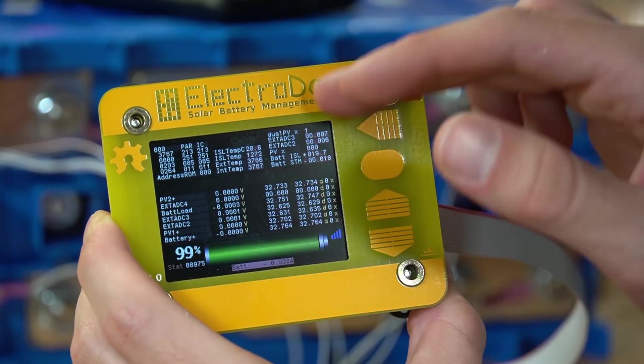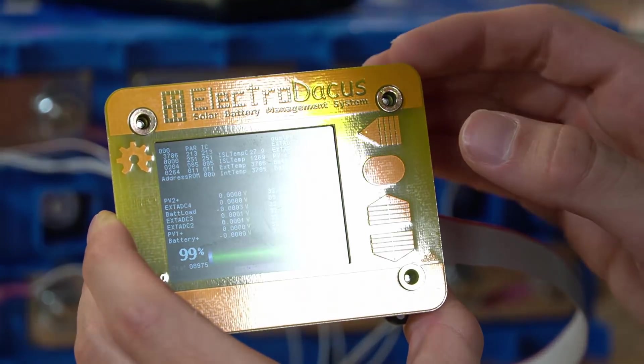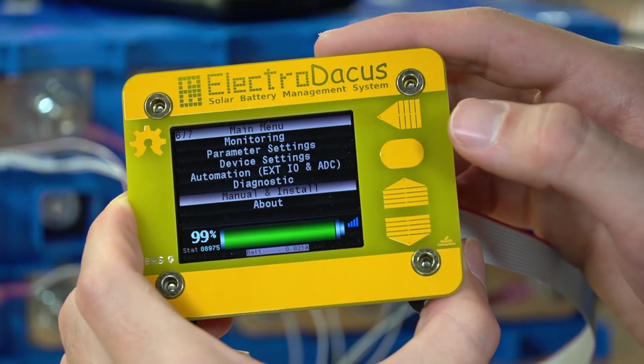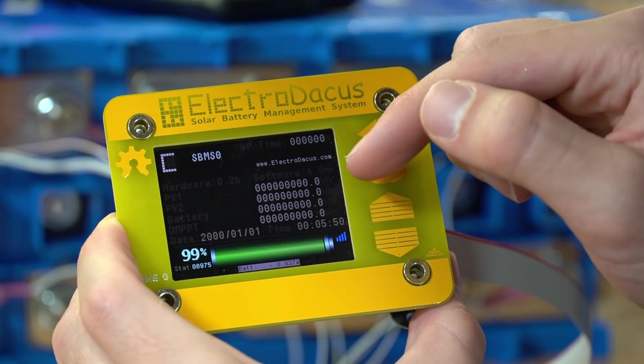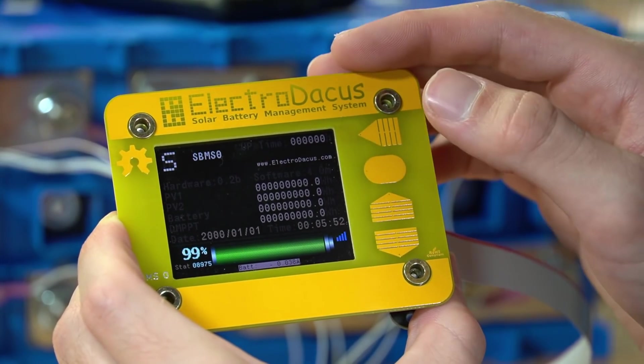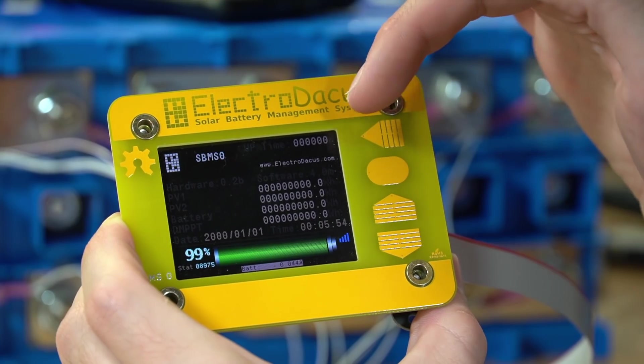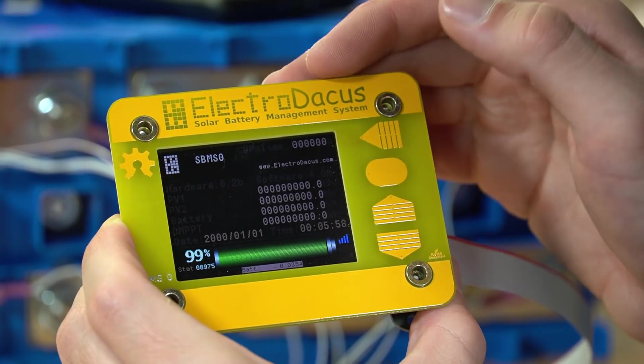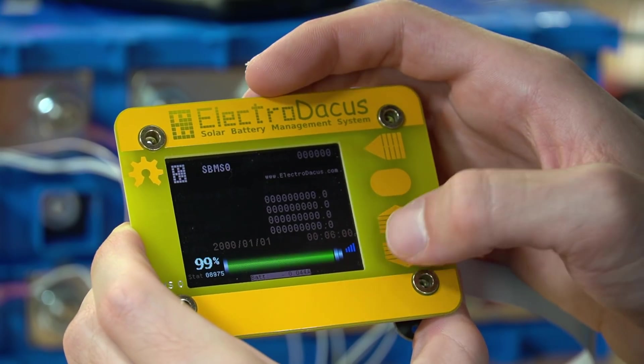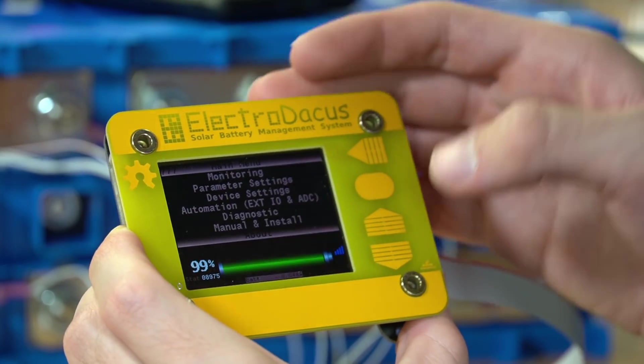And under diagnostics, it tells you what every single port is doing. And then I try to press the manual and install button, but it wouldn't do anything in the about. Let's see. It tells you how many watt hours your PV array has generated, the hardware, software, the MPPT, how many watt hours if you're using the Victron, all sorts of other cool stuff. He did a great job, man. This is so cool.